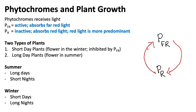During the night, when there is no sunlight, phytochrome far red slowly degenerates back into phytochrome red. However, if the night is very short, the phytochrome far red does not have enough time to completely convert back into phytochrome red, so we still see a high level of Pfr.